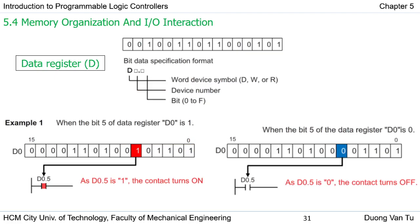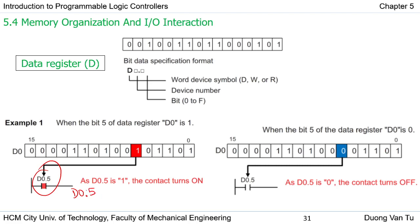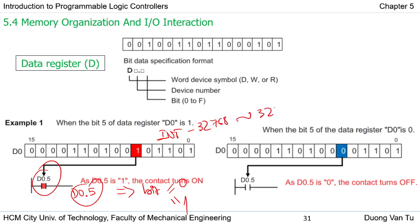Now we can see the data register. For the data register, you can access the whole register or you can access an individual bit. For example, when you want to access bit number 5 of register D0, you write it in the format D0.5. This bit value is only 0 or 1, whereas the full register has 16 bits with data range from -32,768 to 32,767.